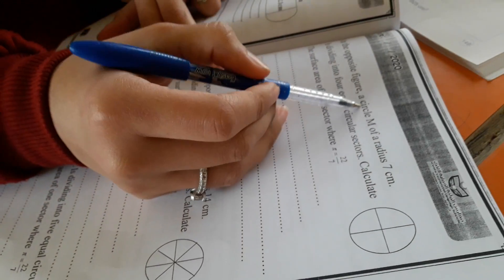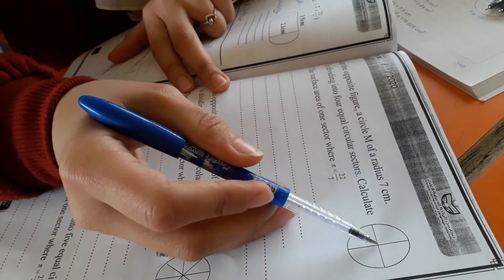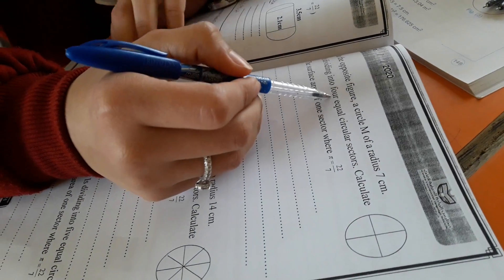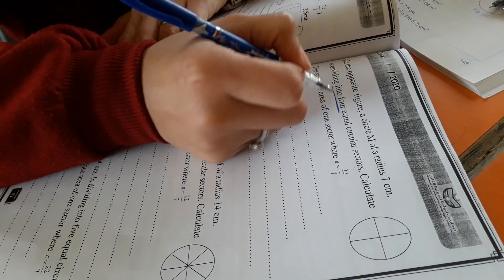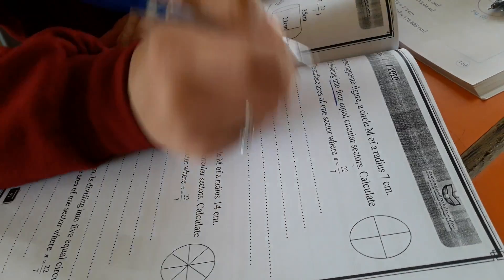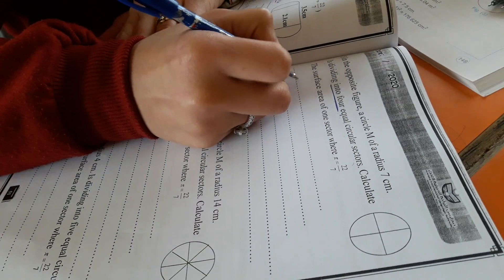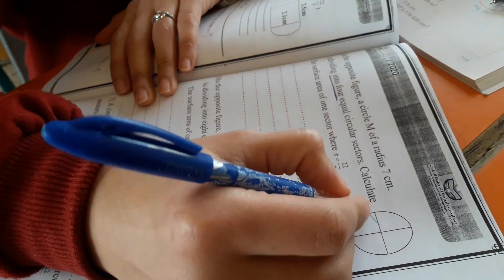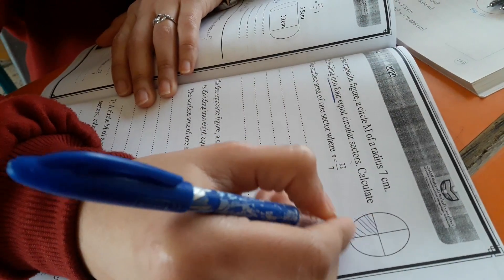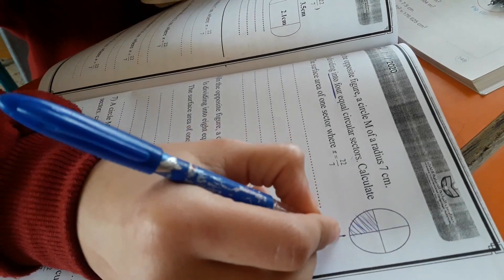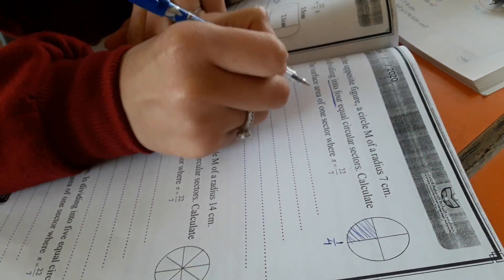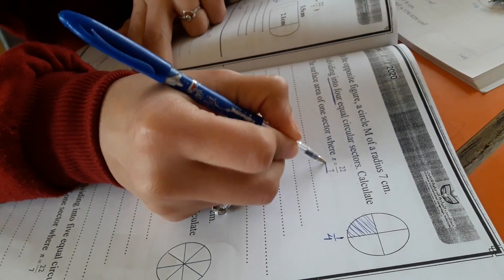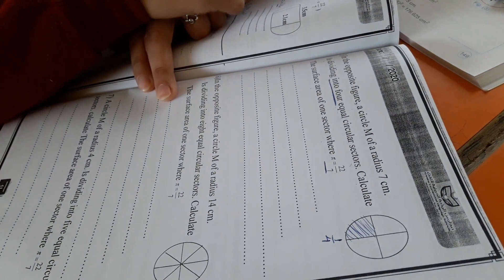Open page 51, exercise number 5. In the opposite figure, a circle M of radius 7 is dividing into 4 equal circular sectors. If it is divided into 4 equal circular sectors, the sector and the N has 1 over 4. This part, this part is 1 over 4. Find the surface area of 1 sector, whereby pi equal 22 over 7.